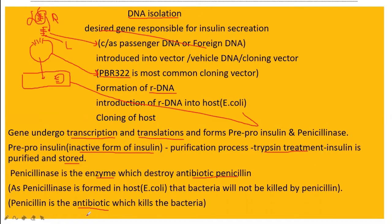We are using antibiotic penicillin to kill bacteria. But what this bacteria has done — it produces and secretes the enzyme penicillinase, meaning this bacteria is not killed by penicillin at all. In other words, it increases its resistance power against penicillin. In this way, insulin is collected.